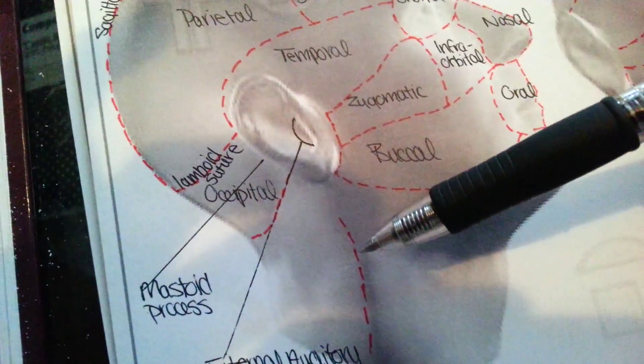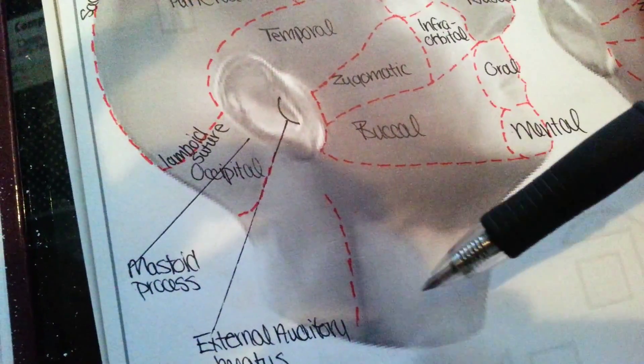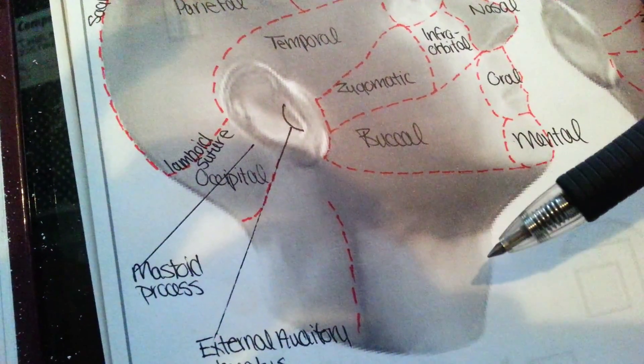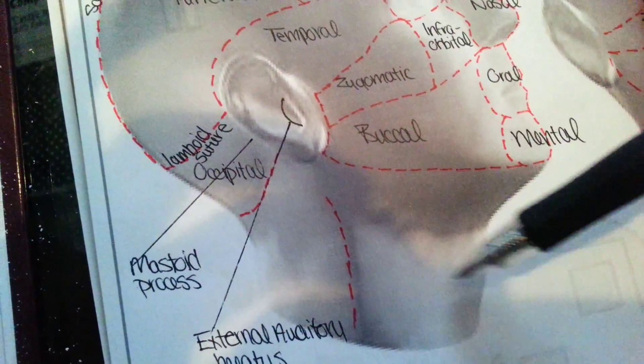This line right here is going to be your sternocleidomastoid, and there's also a sheath of muscle going around your neck called the platysmus, which goes all the way around here.